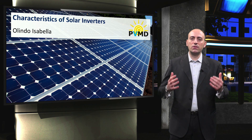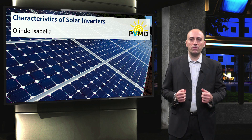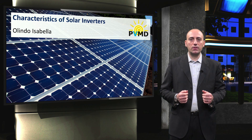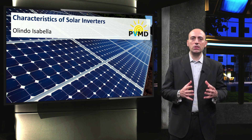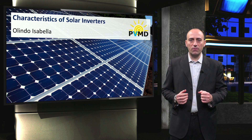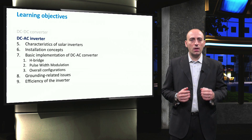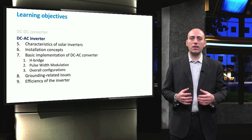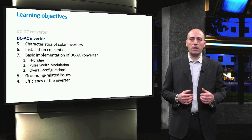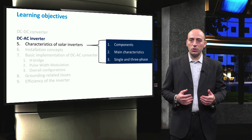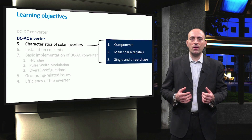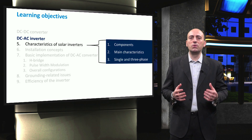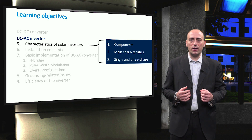In this video, we start the second part of the electrical conversion chapter that is about DC to AC inverters. This second part is subdivided as follows. In this video, after an introduction on solar inverters, we will see the main characteristics of this device.